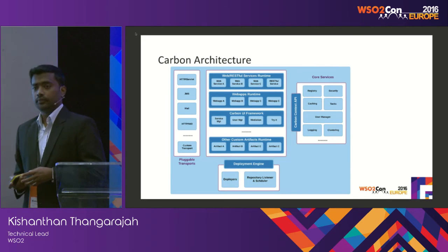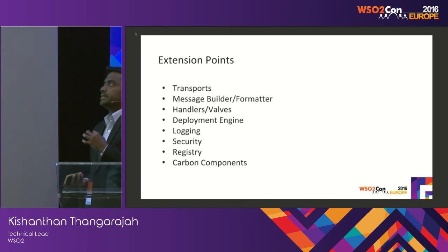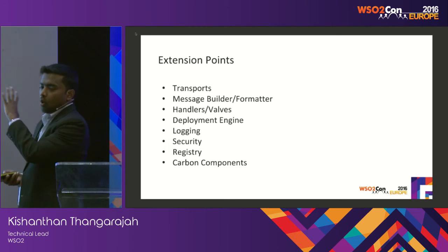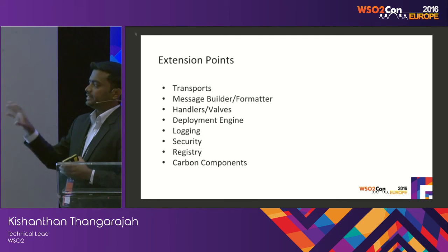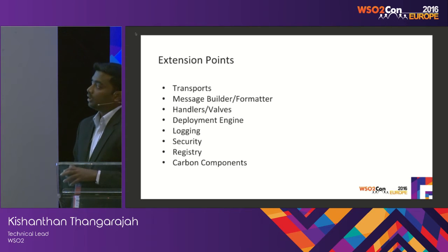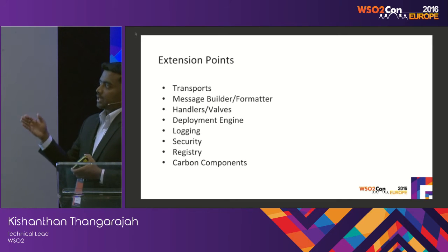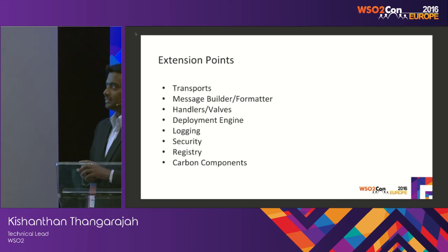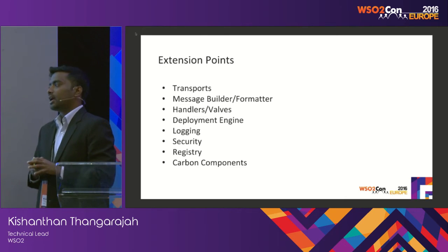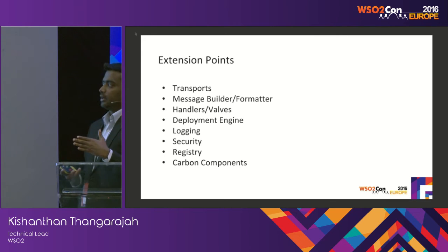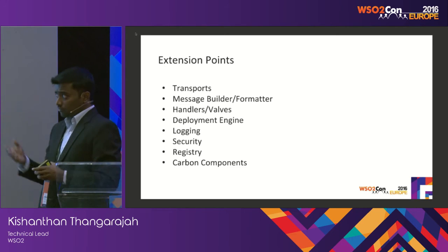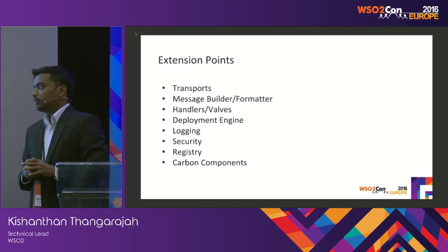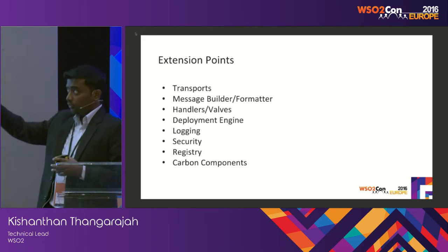That's the component architecture of Carbon. Now let's look at the major extension points available in the runtime architecture. I've listed only the core extension points, but there are various others. These are the main extension points used by users and customers: the transport framework, message builder and formatter, handlers or valves, deployment engine, logging, security, and registry — and finally how to develop a Carbon component for all of these.